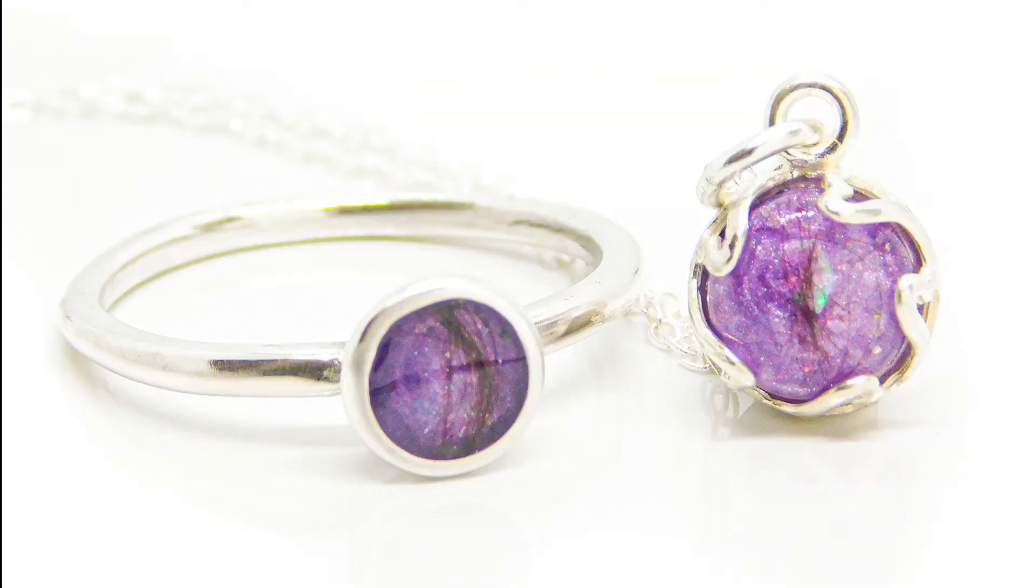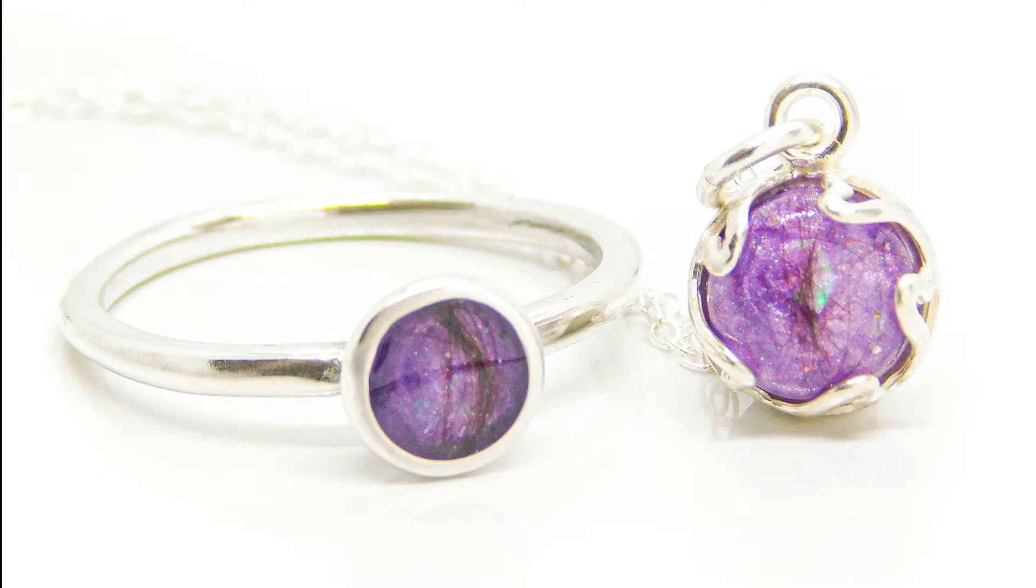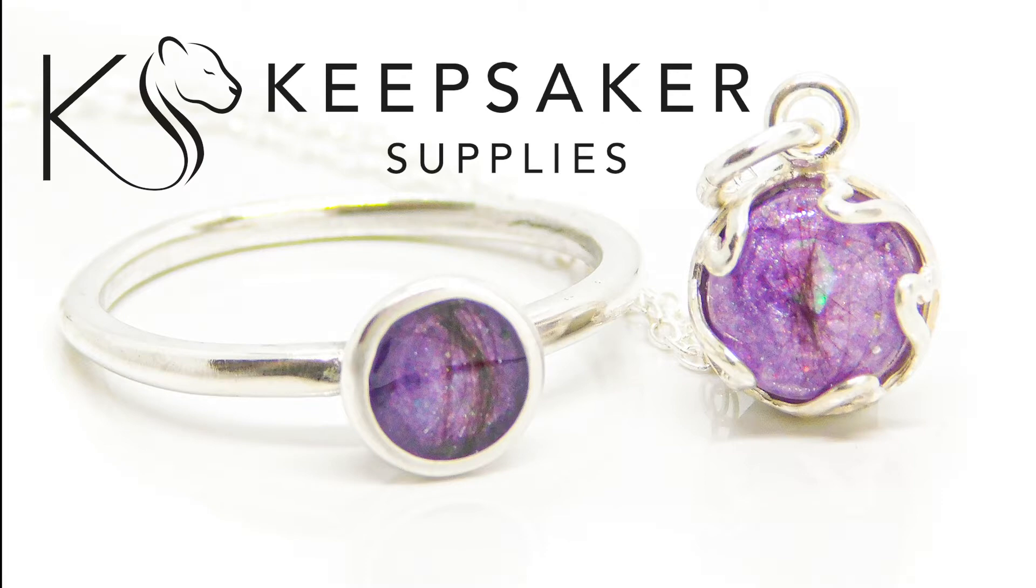In this video I'll be using UV resin, direct pour and cabochon stone techniques to create a lock of hair ring and a small bonus necklace. I've linked to all the supplies I'm using in the video description which are for sale on my website.